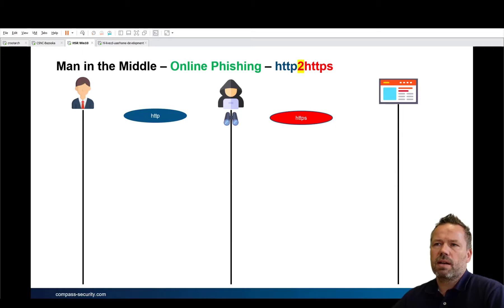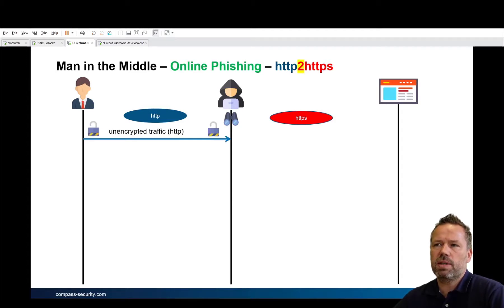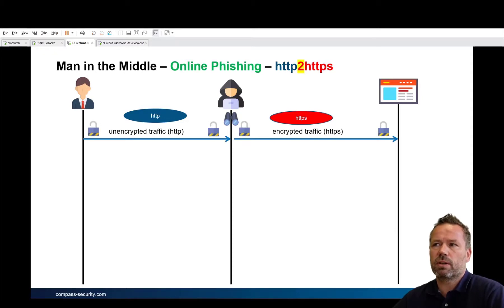Sometimes, to bypass the SSL mismatch error, pen testers offer an HTTP server. In this case the client connects to the HTTP reverse proxy, and the reverse proxy sends it over HTTPS to the destination server, since the target server does not have an HTTP port open. This acts as a gateway between HTTP and HTTPS.